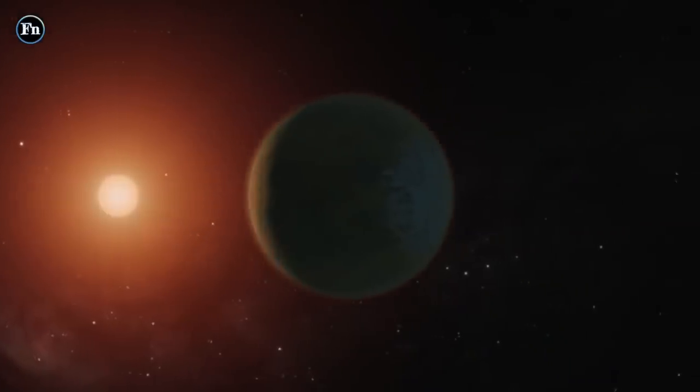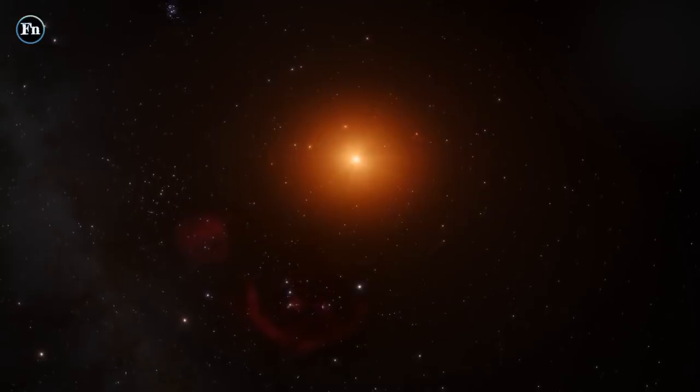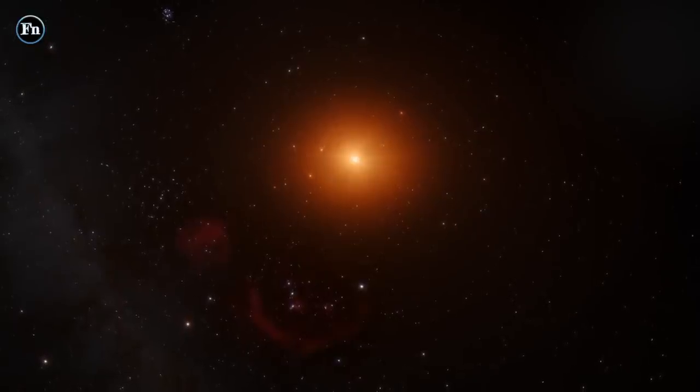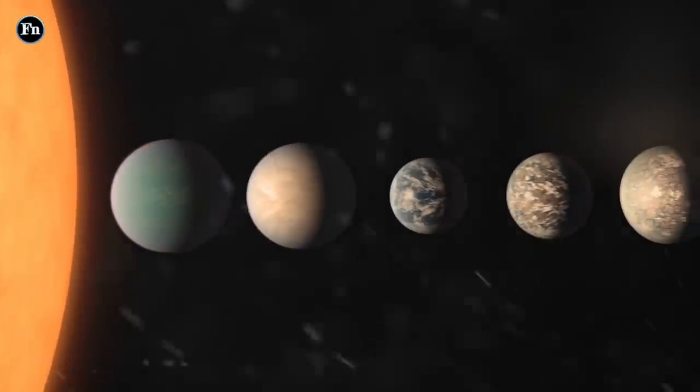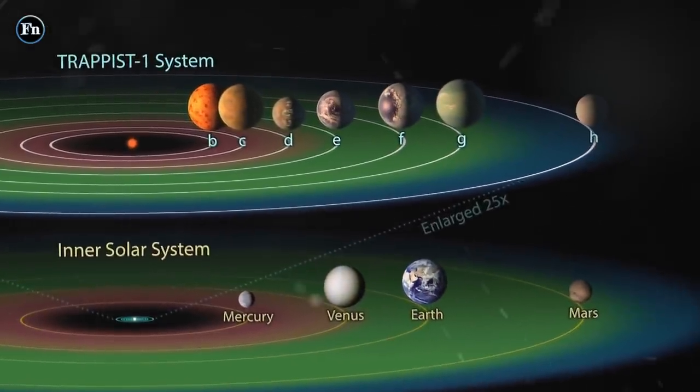This confirms the case that these planets could be rocky and possibly hold onto water. This result was published in July 2016. Using NASA's Spitzer Space Telescope and ground-based telescopes, astronomers found that the system had seven planets in total, and three of these planets are in the potential habitable zone.